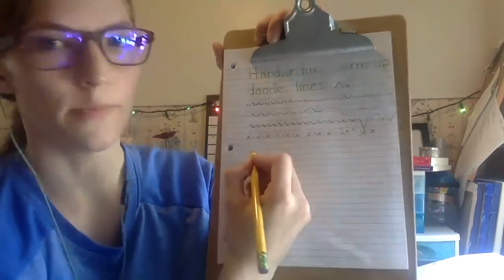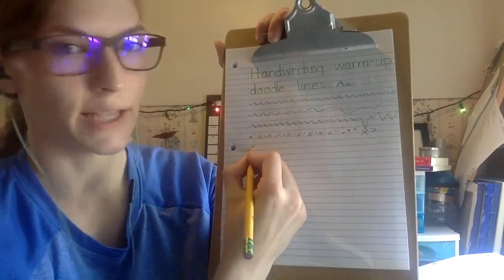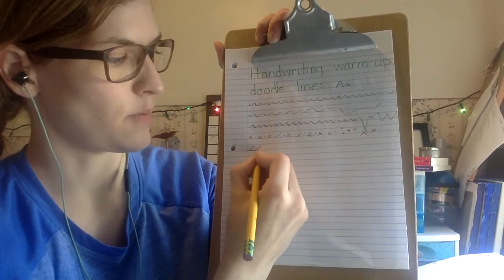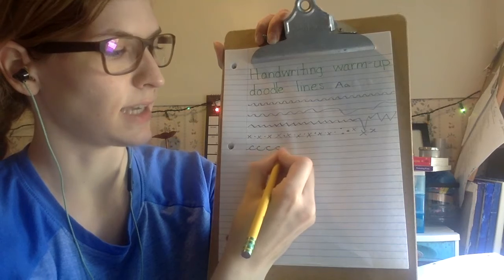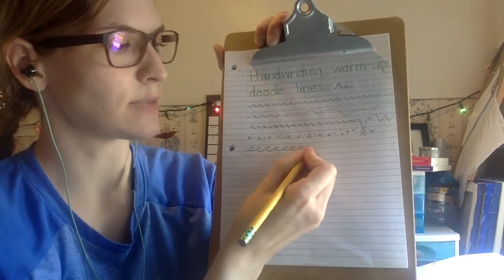For the next row let's do some tricky C curves. So we'll do magic C and that comes down, next one magic C but they're all connected kind of like ocean waves. We'll try to make them as evenly as we can.